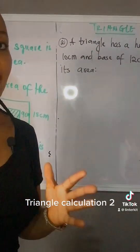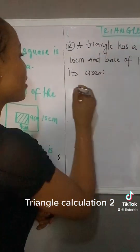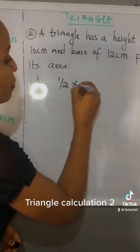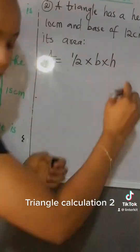I believe we still remember the area of a triangle. So the area of a triangle is half base and its height.